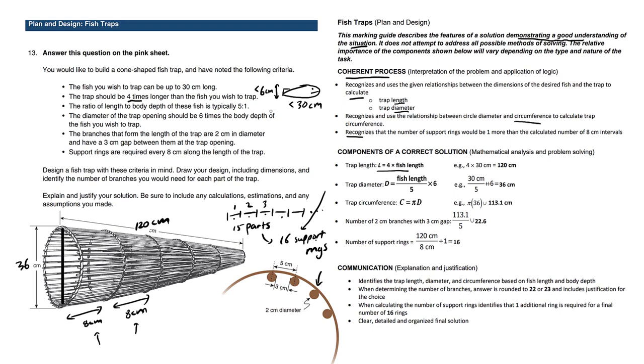The trap length is 4 times the fish length. So here's a diagram. The fish length is 30. 4 times 30 is 120. So here, we're just trying to understand the problem, but it's good to show your work. And we have a very clear formula here. The trap diameter is going to be based off the fish length divided by 5, which happens to be this over here. Now, where does the times 6 come from? It comes from this given information over here, 6 times the body depth.